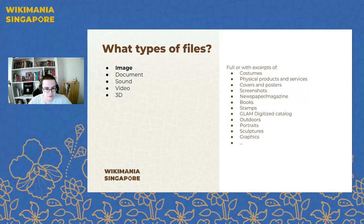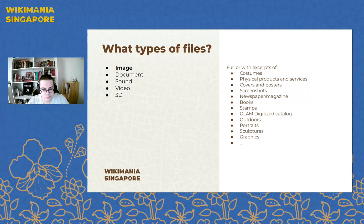What type of files are we talking about? First we have images — for example, excerpts of costume physical products and services, covers and posters, screenshots, newspaper, magazine, books, stamps, GLAM digitized catalogs, outdoor images, portraits, sculptures, graphics, and so on. And then we have documents.